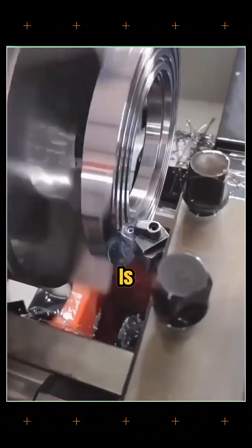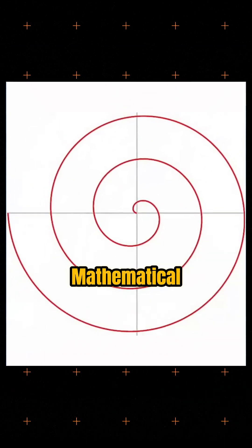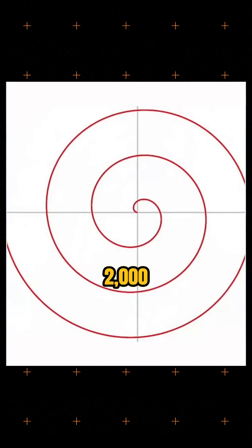This spiral is not just any curve. It's the Archimedean spiral, a mathematical shape discovered over 2,000 years ago.